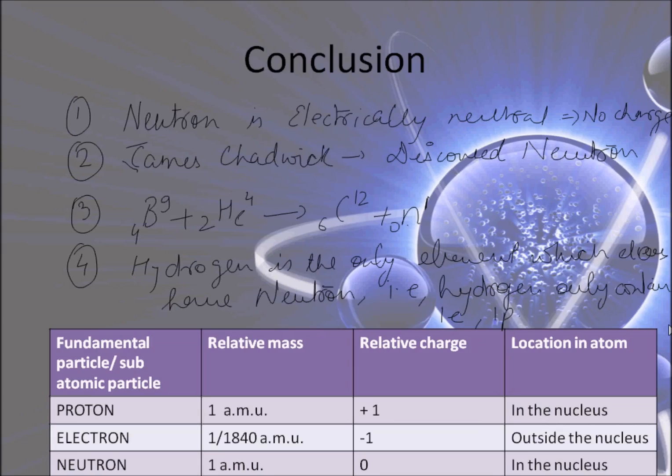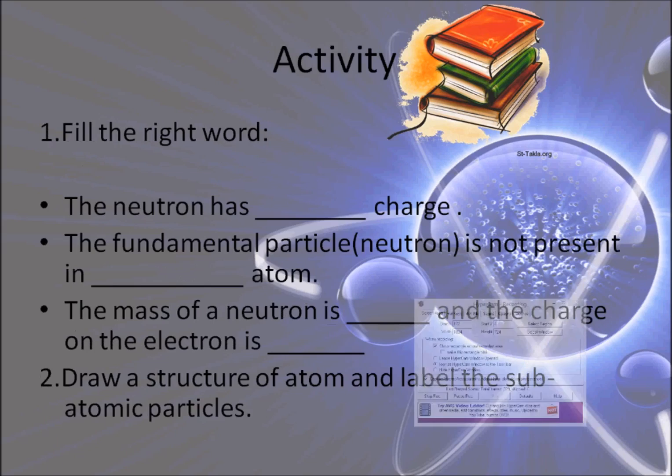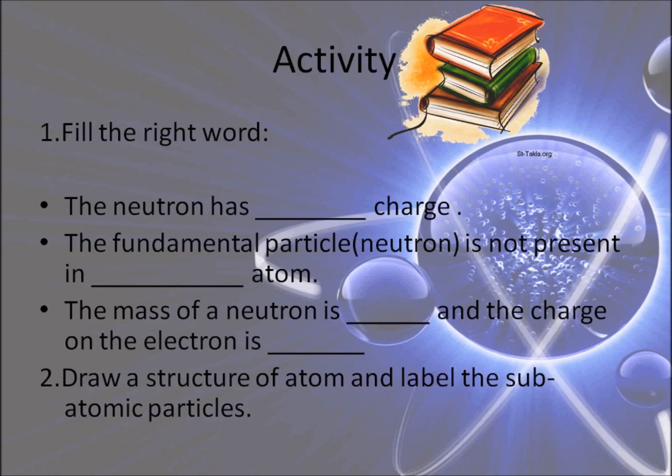So here I end up with this session. So friends, it's your time to do an activity. We have two basic questions here. First to fill the right word: The neutron has ___ charge. The fundamental particle neutron is not present in ___ atom. The mass of a neutron is ___ and the charge on the electron is ___. And the second question is to draw a structure of an atom and you just have to label these subatomic particles in that structure.